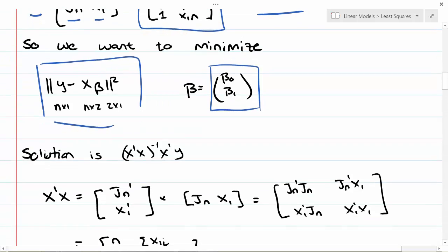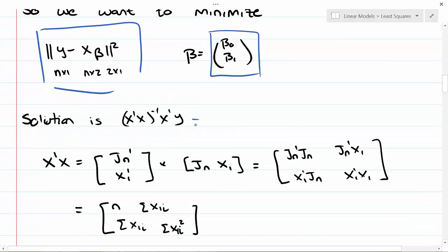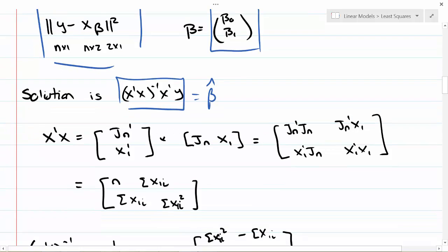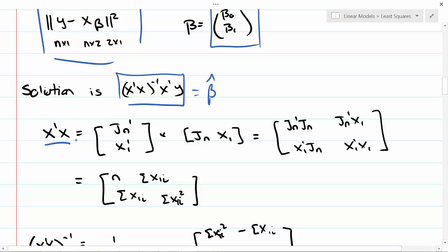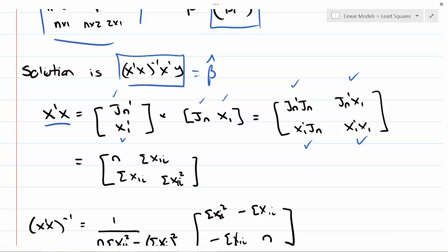Our solution to beta is (x transpose x)^(-1) x transpose y. In this case, x transpose x inverse is J_n transpose on top of x_1 transpose times this matrix. Using the rules for multiplication of partition matrices, we get J_n transpose J_n and J_n transpose times x_1 in the upper right matrix entry, x_1 transpose times J_n, and x_1 transpose times x_1.